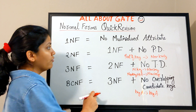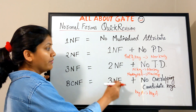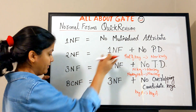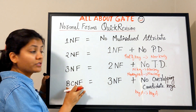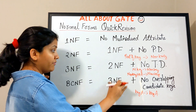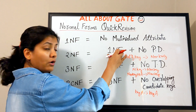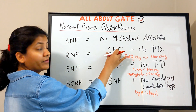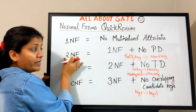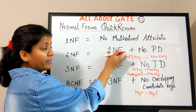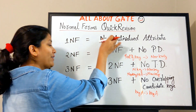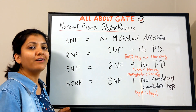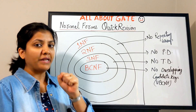Every relation in 3NF is always in 2NF and always in 1NF. Every relation in BCNF is also in 3NF, also in 2NF, and also in 1NF. A relation only in 3NF is not necessarily in BCNF.